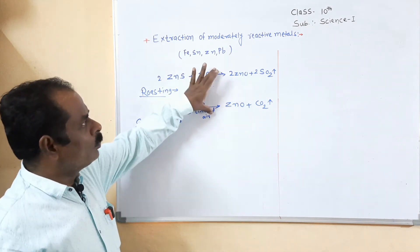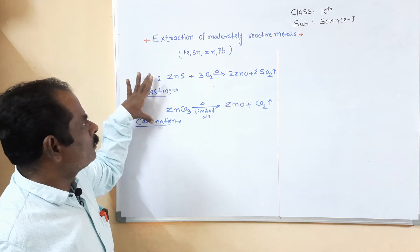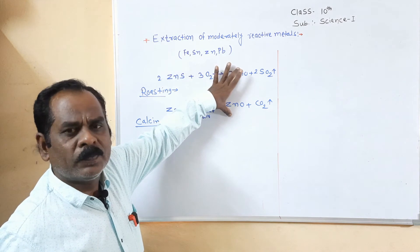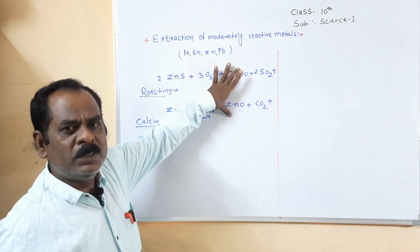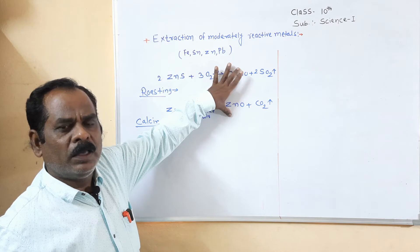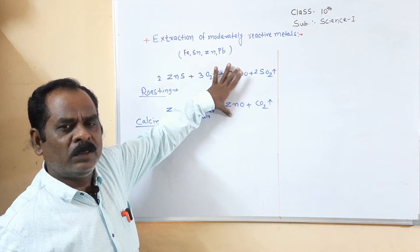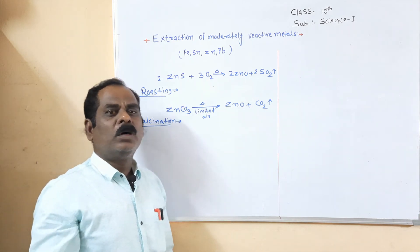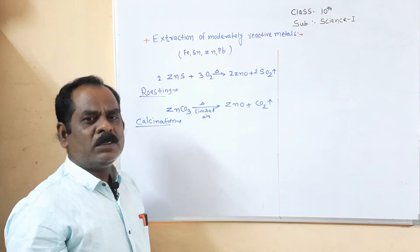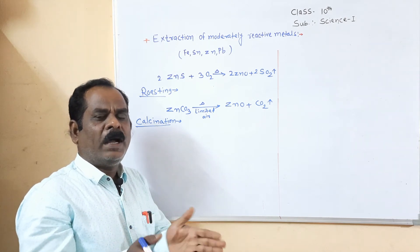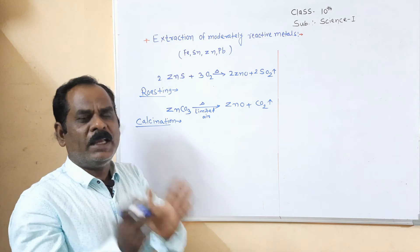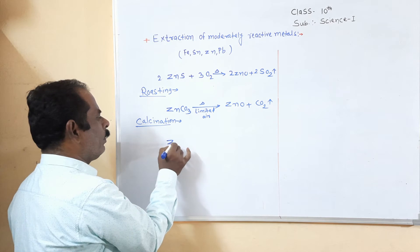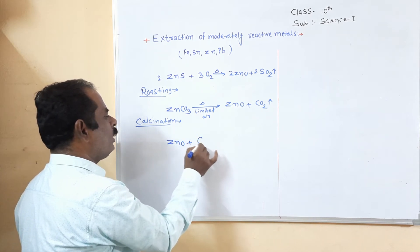As you can see on the blackboard, in both of these methods the sulfide or carbonate ore is converted into an oxide — here zinc oxide is formed. So the first step in extracting moderately reactive metals is to convert the sulfide or carbonate ore into its oxide. Then we perform the reduction process. Reduction is the reaction in which oxygen is removed from a compound. This zinc oxide is then reduced using a suitable reducing agent.